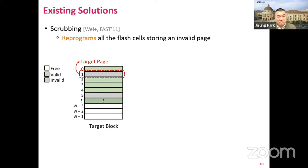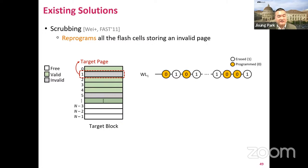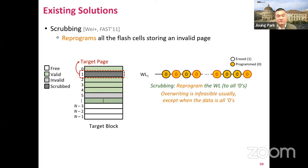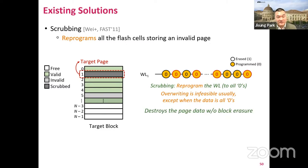To address this, prior work proposed a data sanitization technique called scrubbing. The key idea of scrubbing is to reprogram all the flash cells storing an invalid page — instead of erasing all the cells, scrubbing reprograms all the cells to be zero cells. Overriding to increase threshold voltage is possible; making all cells be zero cells is certainly possible. Scrubbing can destroy the page data without block erasure. When this technique was first proposed more than a decade ago, the problem seemed to be solved.